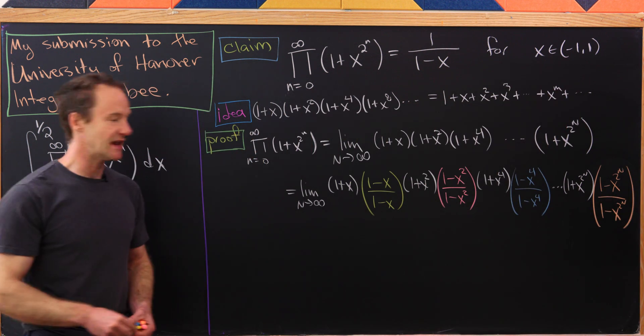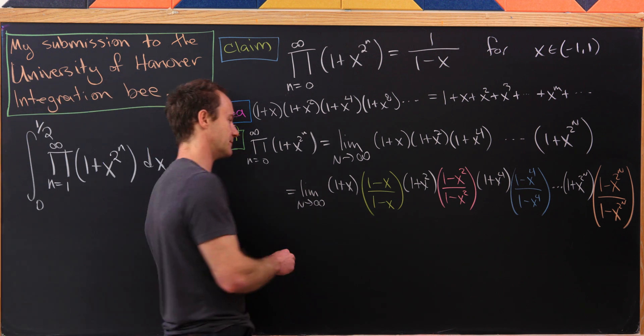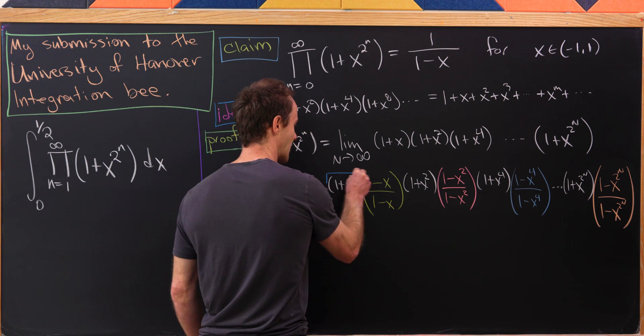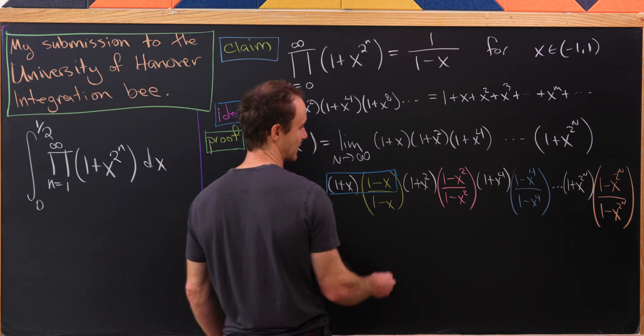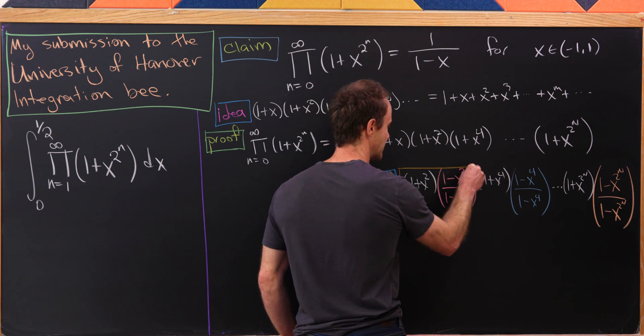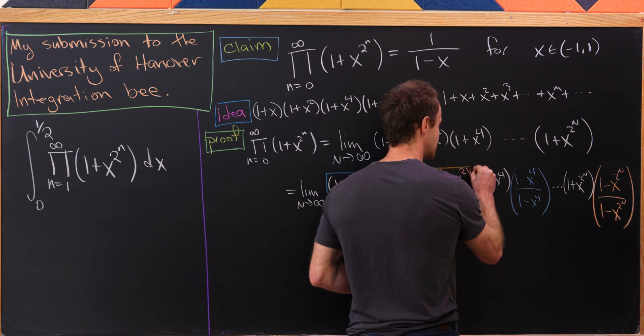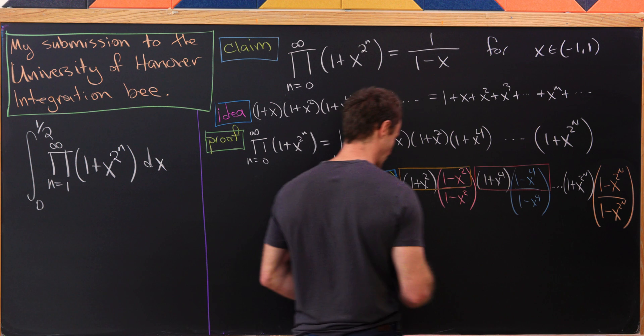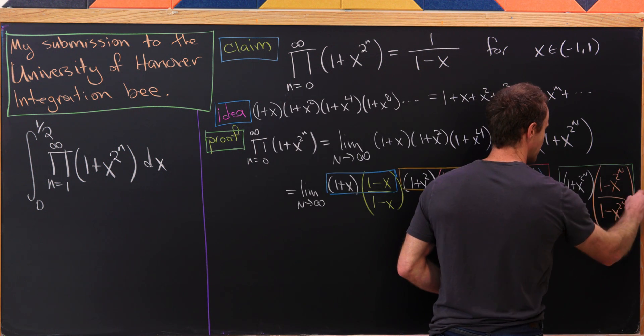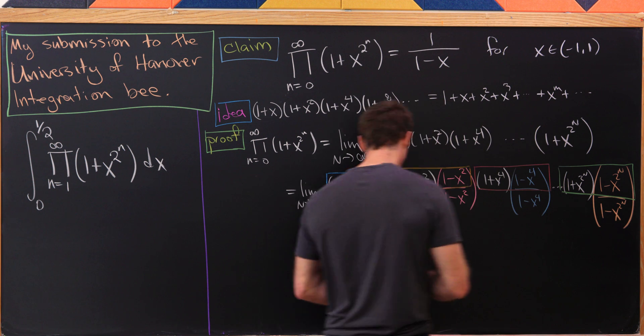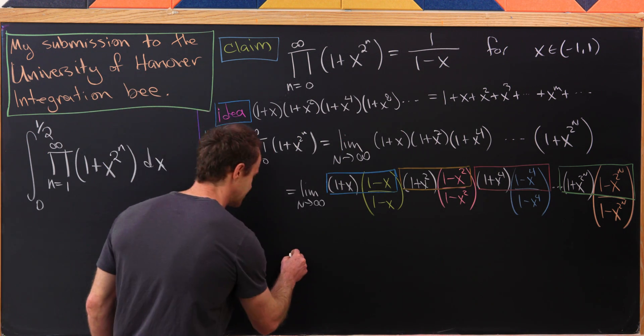Now the trick is to carefully pair these numerators and then combine them. I'd like to pair 1 plus x with 1 minus x. My second pairing will be 1 plus x squared with 1 minus x squared. Next I'll do 1 plus x to the 4th and 1 minus x to the 4th, and all the way down here it'll be 1 plus x to the 2n and 1 minus x to the 2n.